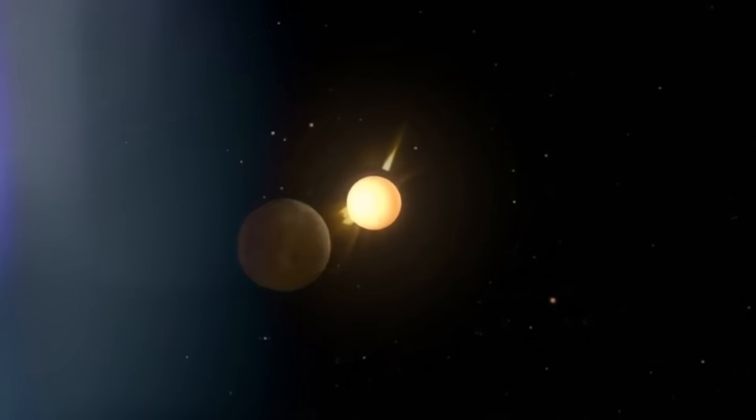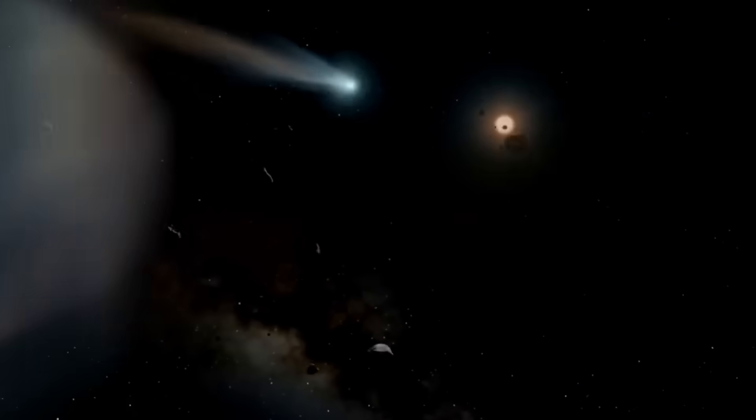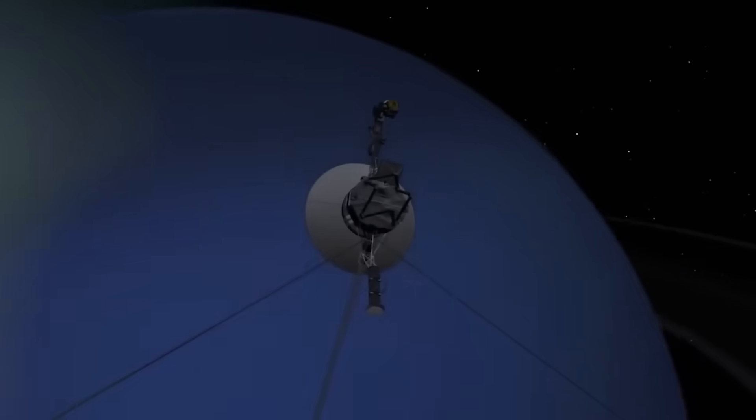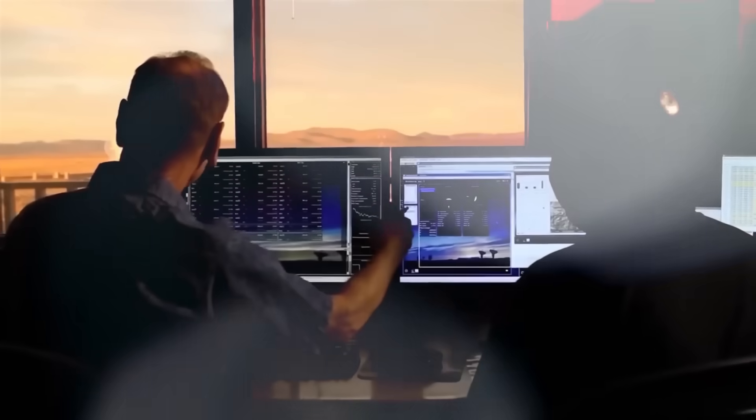15 billion miles from Earth, in a region so dark and remote that even starlight seems to hesitate, a 46-year-old machine built in the 1970s drifted in silence. Voyager 1, the furthest human-made object from Earth, was never meant to listen, only to speak.